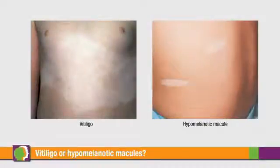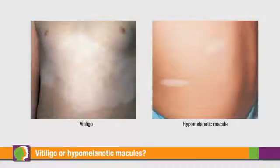Another example is distinguishing vitiligo and TSC-related hypomelanotic macules due to their similar lack of color. Vitiligo is a progressive skin disorder marked by sharply circumscribed white spots of skin. Hypomelanotic macules are white skin lesions that may present in different shapes on the posterior trunk, extremities, head, or neck. So that's why we look to the size, shape, and number of these lesions for insight.